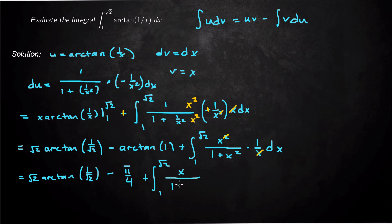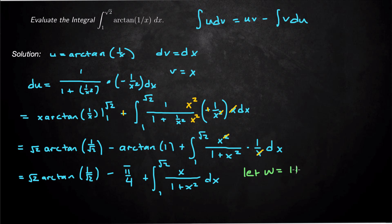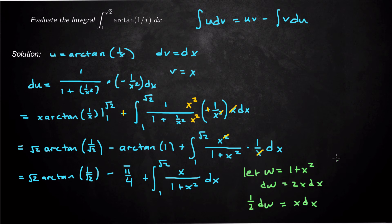Plus the integral from 1 to square root of 2 of x over (1 plus x²) dx. To evaluate this I'll use substitution: let w equal 1 plus x². Then dw equals 2x dx, so 1 half dw equals x dx. Changing the bounds: when x equals 1, w equals 2; when x equals square root of 2, w equals 3. So the integral goes from 2 to 3.